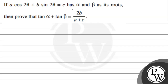Let's see the question. The question says: if A cos 2θ plus B sin 2θ is equal to C, and alpha and beta are its roots, then prove that tan alpha plus tan beta is equal to 2B divided by A plus C.